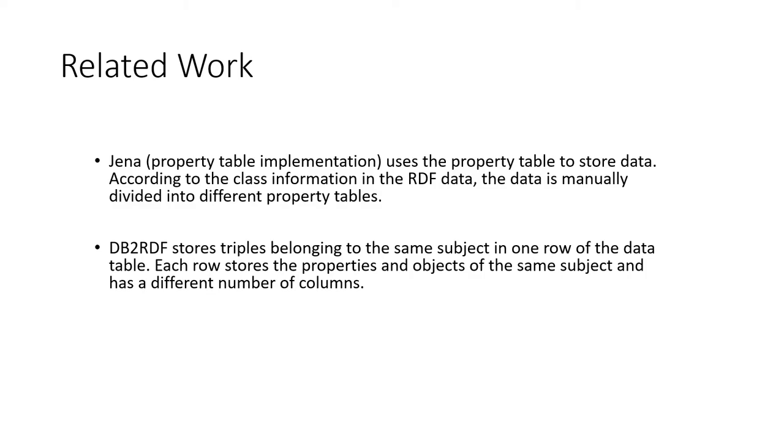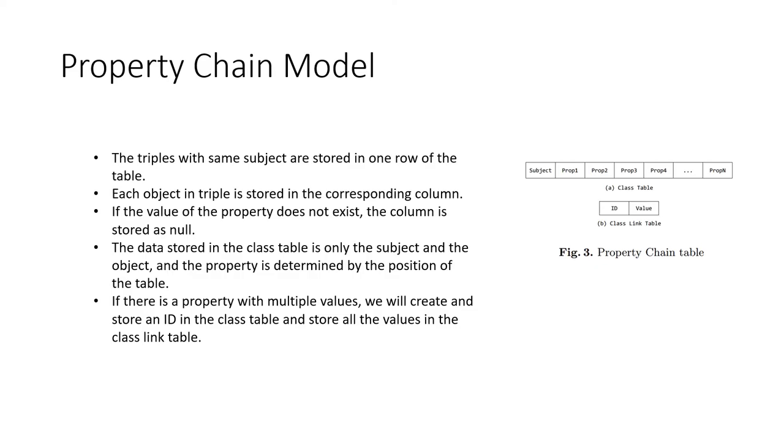Jena uses the property table to store data. According to the class information in the RDF data, the data is manually divided into different property tables. But this method requires artificial creation of property tables and cannot handle arbitrary data. DB2 RDF is a DB2-based RDF data management system that stores triples belonging to the same subject in one row of the data table. Each row stores the properties and objects of the same subject and has a different number of columns. This approach does not divide different data into different parts and is not friendly to distributed systems.